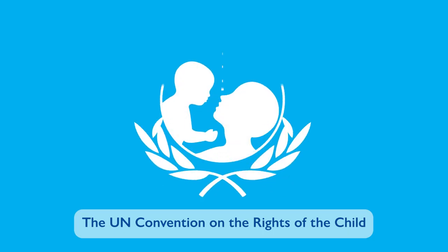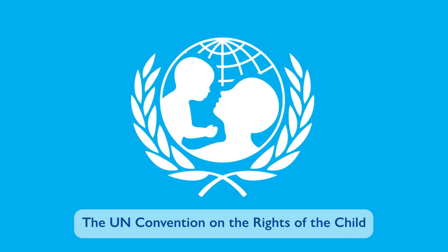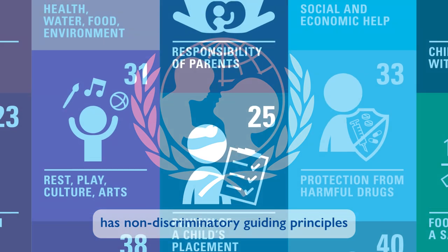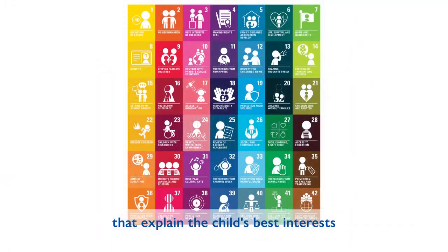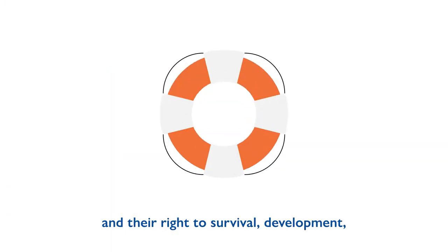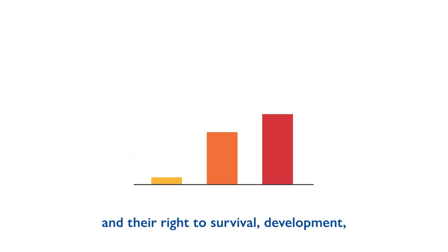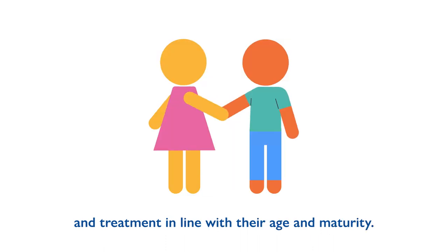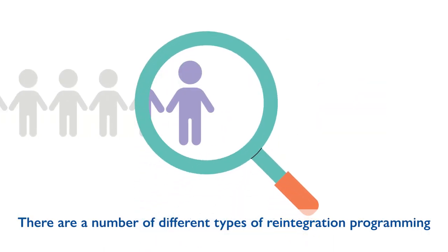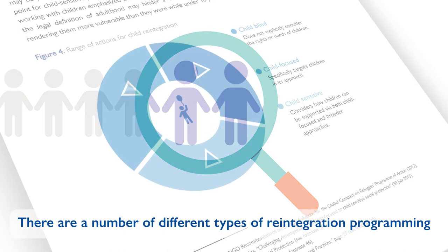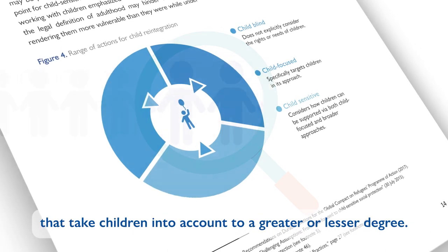The UN Convention on the Rights of the Child has non-discriminatory guiding principles that explain the child's best interests and their right to survival, development and treatment in line with their age and maturity.